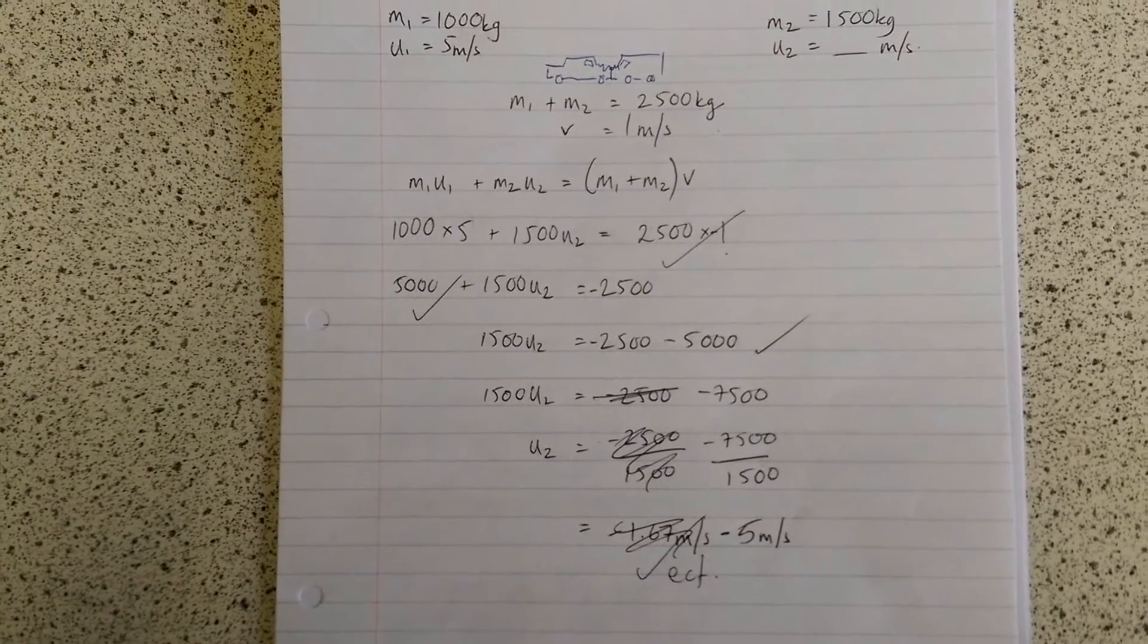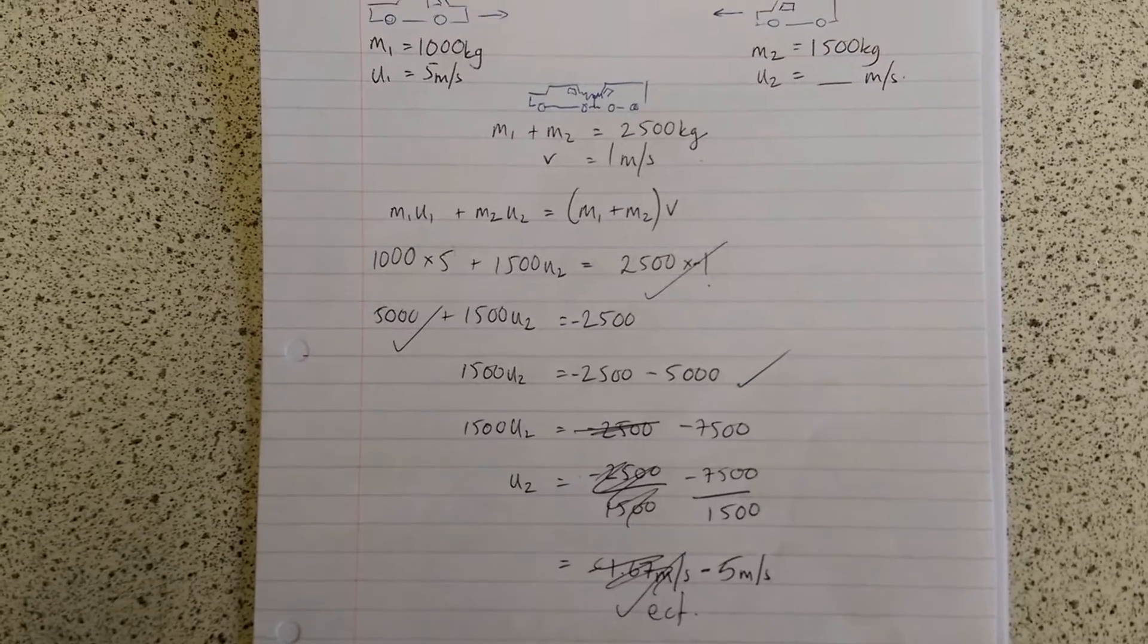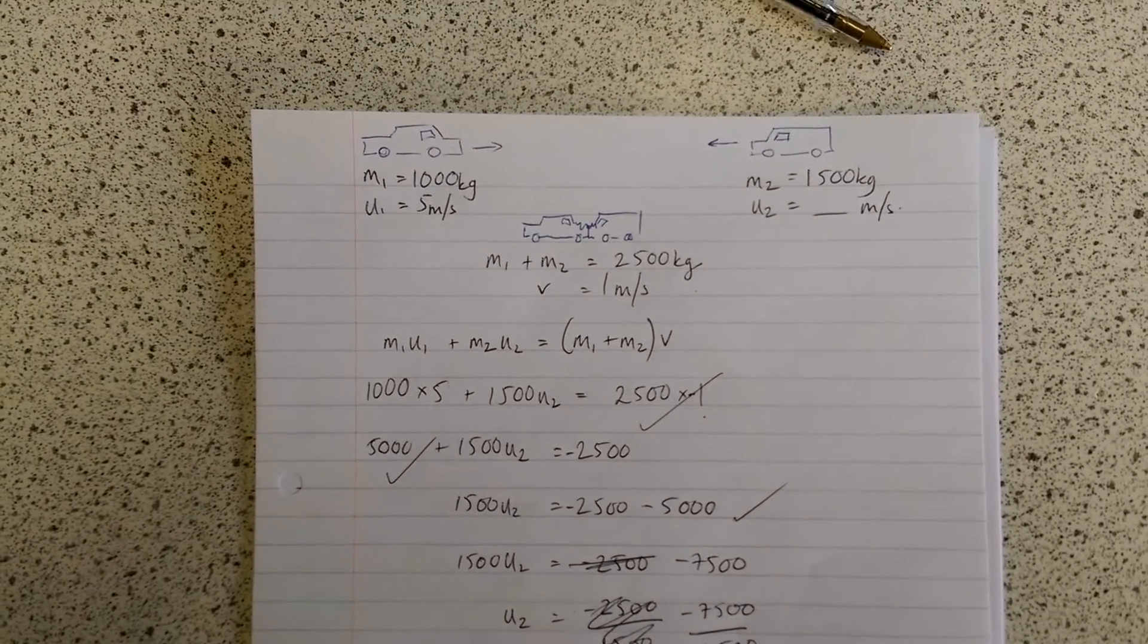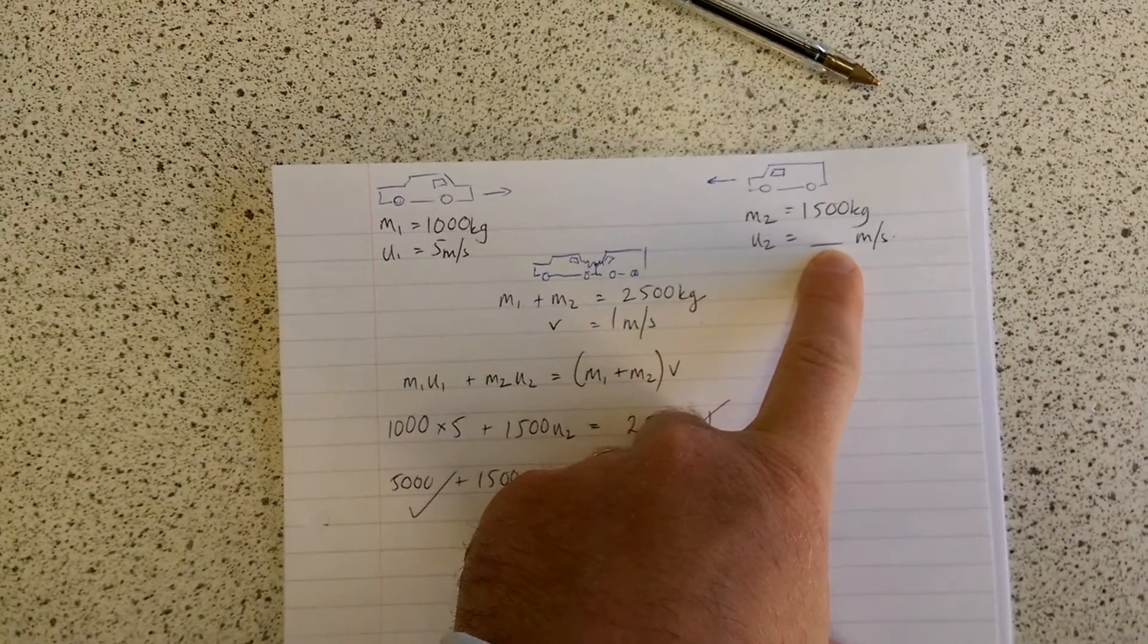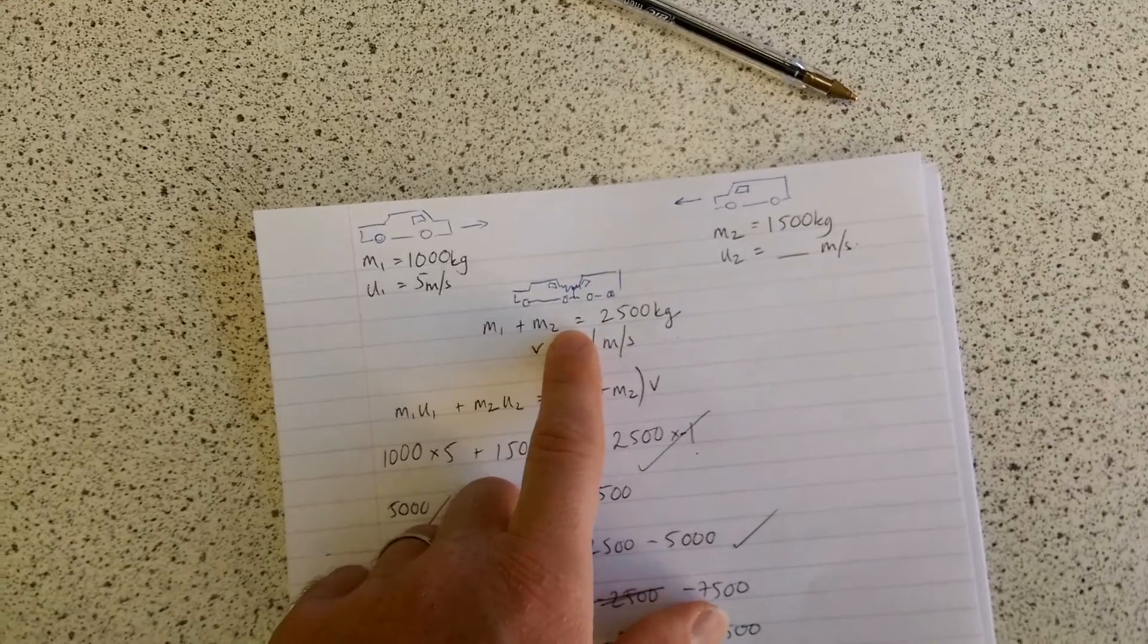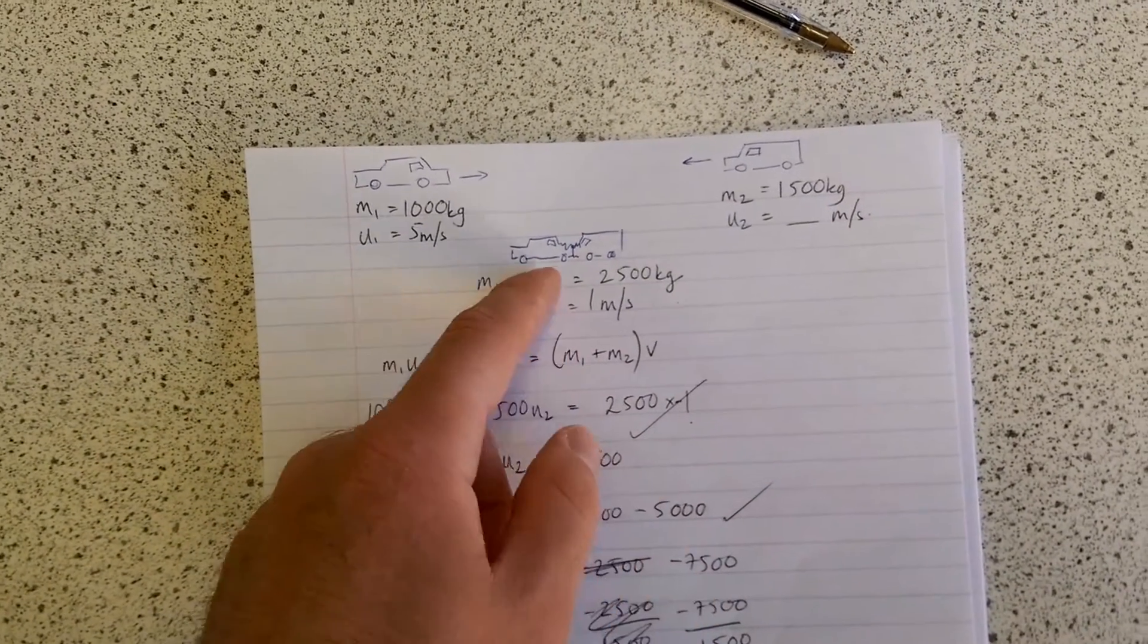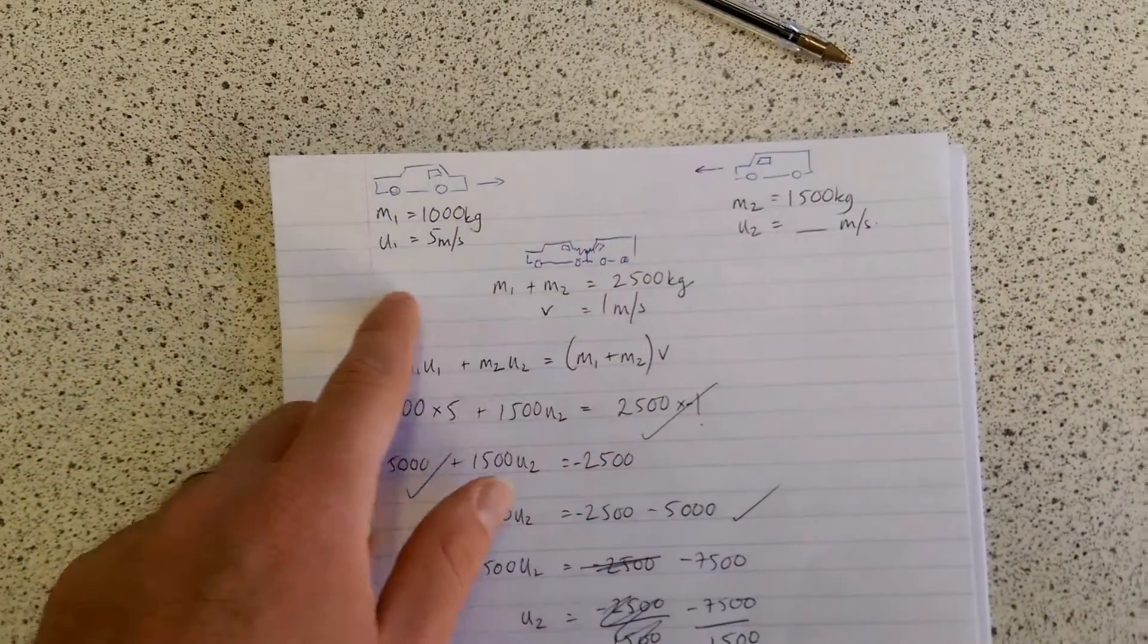Then I looked at the mark scheme and the answer was 5 meters per second. Now actually I would have been able to work back if I'd carefully checked, because if this was 1.67, this would have less momentum than this. So the crumpled object here, the two masses combined, would have been moving off in this direction. But I knew from the question that it was going in this direction.